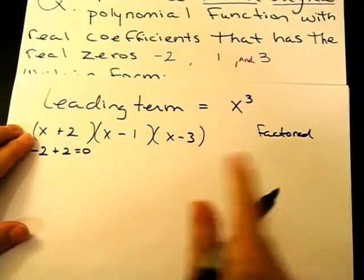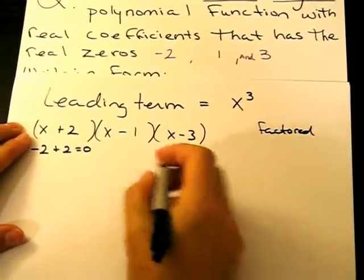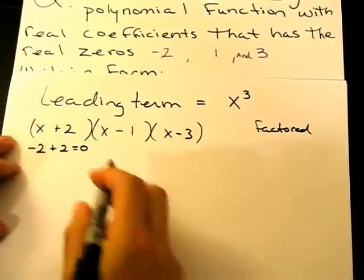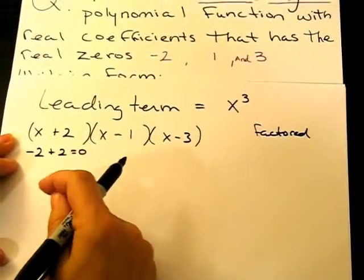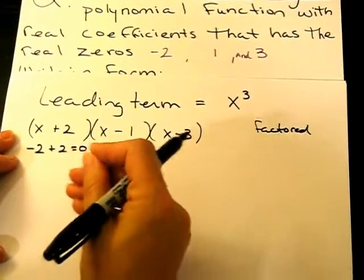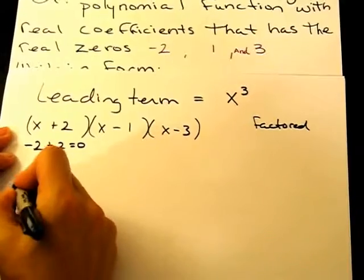So from this factored form, I'm going to foil it and expand it. I'm going to start just by foiling two pieces. Foiling, of course, is first, outer, inner, last. So we'll start by multiplying x times x, which becomes x squared.